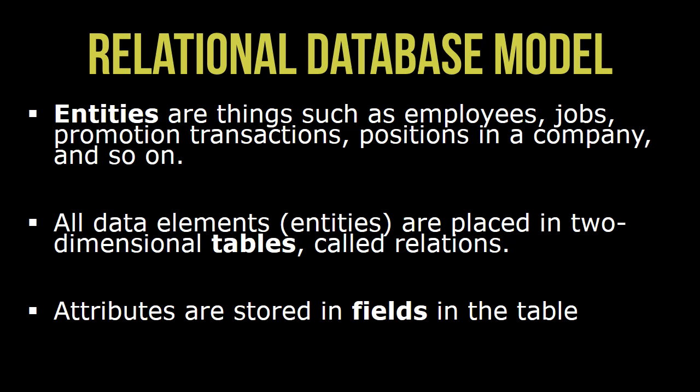Entities are things such as employees, jobs, promotion transactions, positions in the company, and so on. They include both physical things such as desks and conceptual things such as bank accounts. A company must analyze its business operations and identify all of the entities it believes are important. Each of these entities is made up of attributes. An attribute is a characteristic of an entity — for example, an employee has a name, an address, a phone number, education, and so on. Attributes also have characteristics such as the type of data — for example, a date, a number, or a character — and the size, such as the number of characters or the largest number that can be stored. Attributes are stored in a field of a table. Think of fields like an Excel spreadsheet cell.